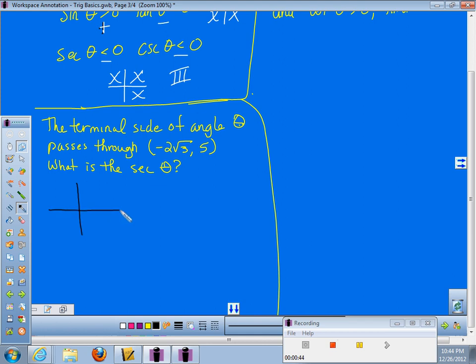So, if we draw a picture, we know the terminal side of this angle, meaning the side of the angle that moves around the circle, passes through the coordinates negative 2 square root of 3, 5. Which means it goes left 2 square root of 3 and up 5, which would put it out in the second quadrant somewhere. You do not need to draw these to scale, you just go, it went left, it went up, draw yourself an angle out in that general direction.